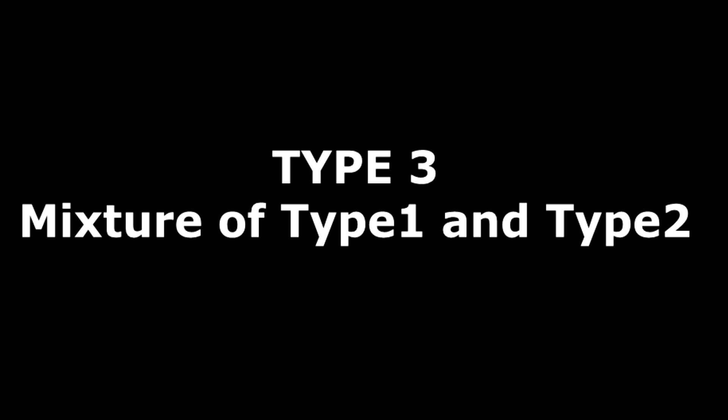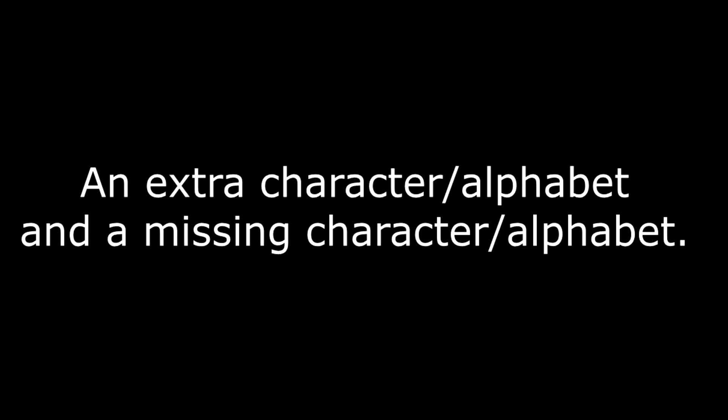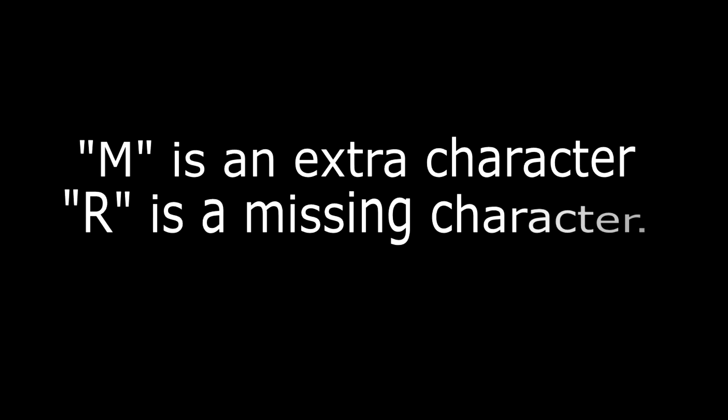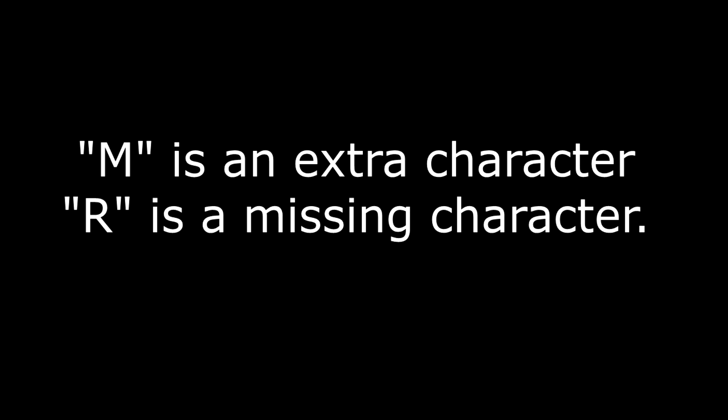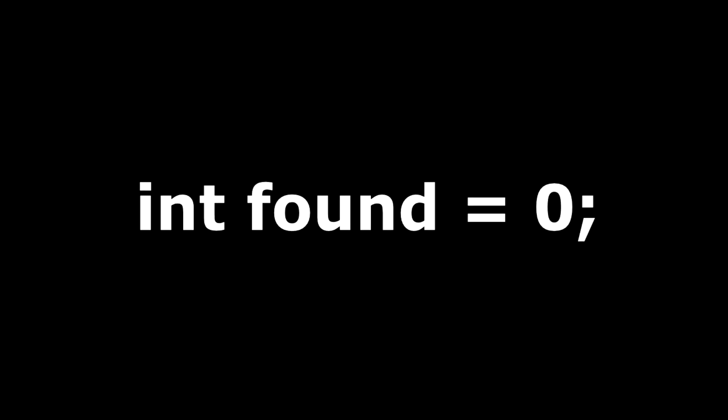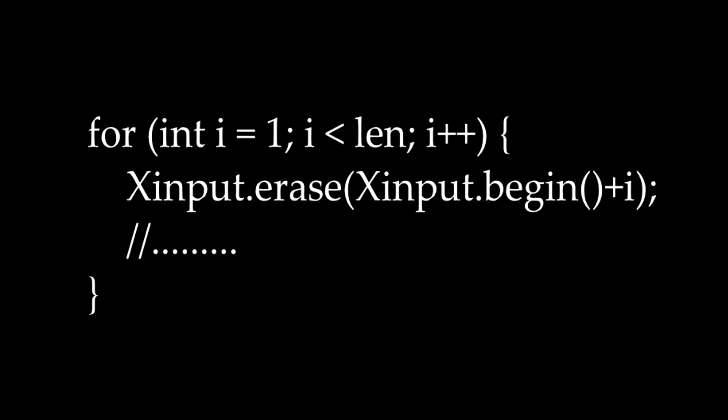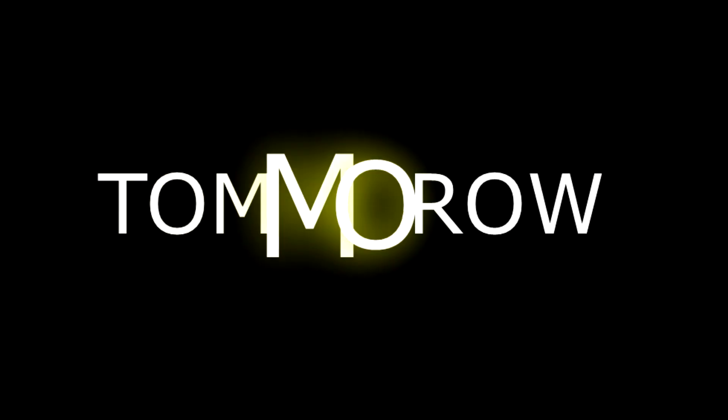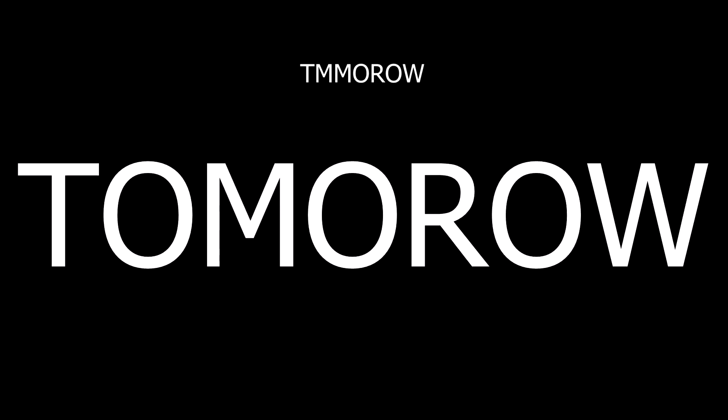Type 3 is a mixture of type 1 and type 2. In this type of mistake there is an extra character and a missing character. For example, if the user enters the spelling of 'tomorrow' as 'tommorrow', then 'm' is an extra character and 'r' could be considered the missing character. To solve such mistakes, declare an integer variable 'found' and initialize it with zero. Remove each and every alphabet one by one from the input except the first character. After removing one character from the string, add every element of the global character array.